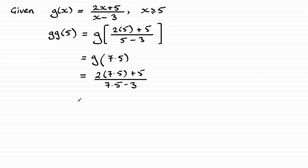And if you work this out, 2 lots of 7.5 is 15, plus the 5 that's going to be 20, and that's divided by 4.5. So what I'm going to do now is just double top and bottom, and you get the exact value of 40 over 9.